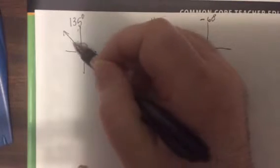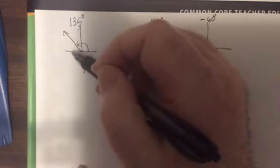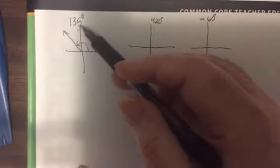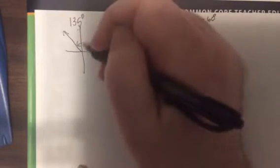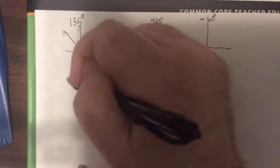Well, the reference angle is made with the terminal side and the closest x-axis. Remember that, say it with me, x-axis. Say it again, x-axis. For some reason people want to use y, but it's always x. So this would be 45 would be the reference angle.